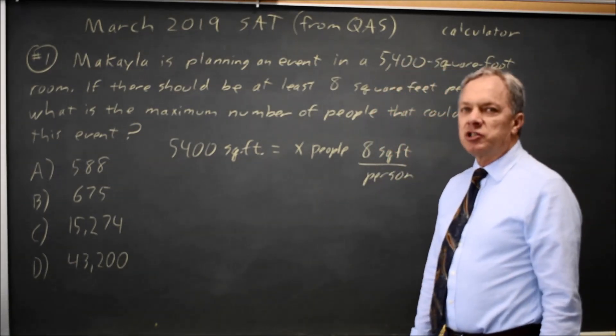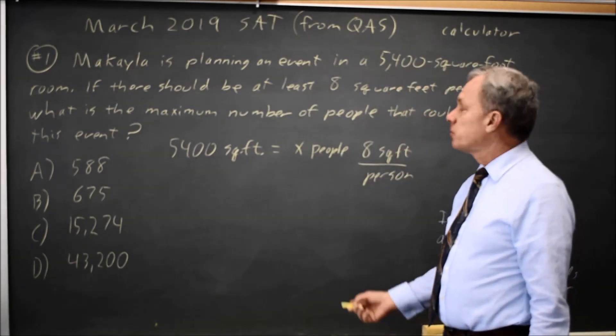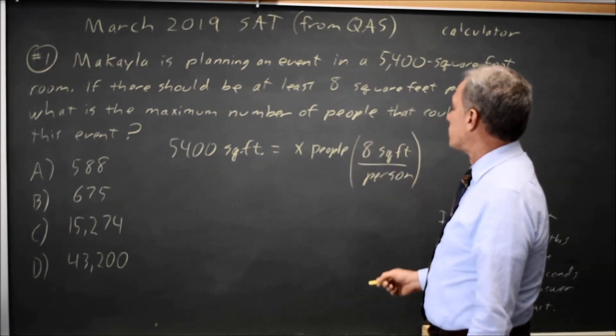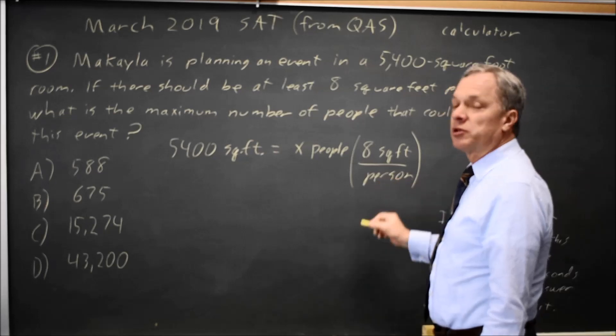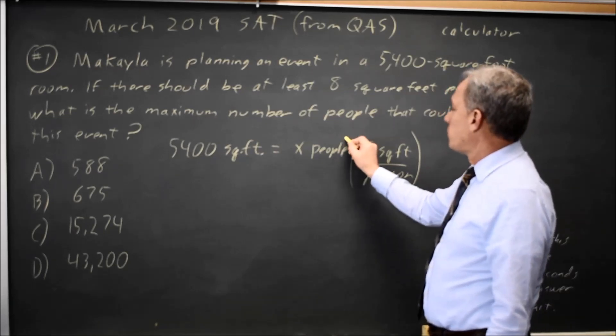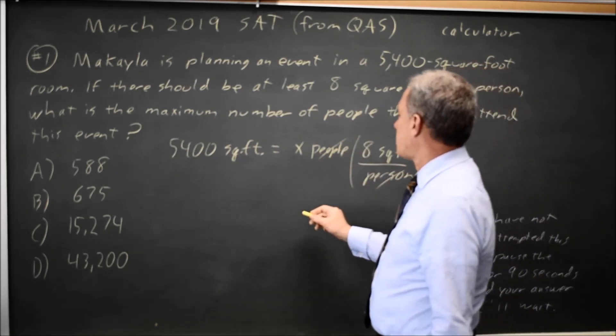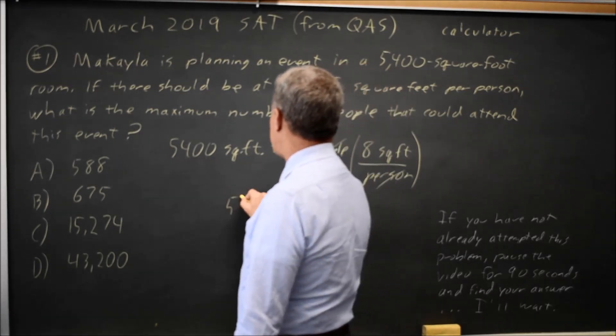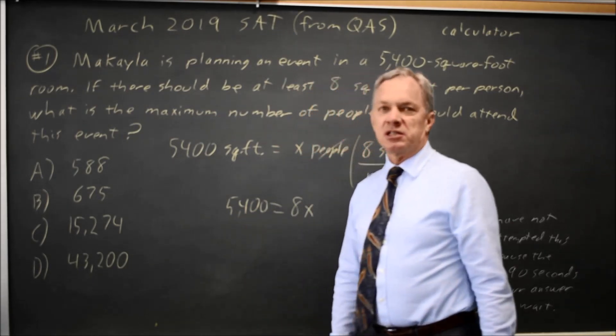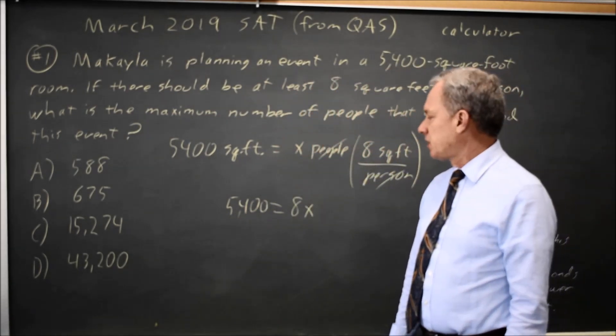If you're unsure how to set this up, look for something like you do in chemistry for converting units, where 8 square feet per person—the people would cancel, leaving you with x times 8 square feet equals 5,400 square feet. Since the units match, that tells us we set it up correctly.